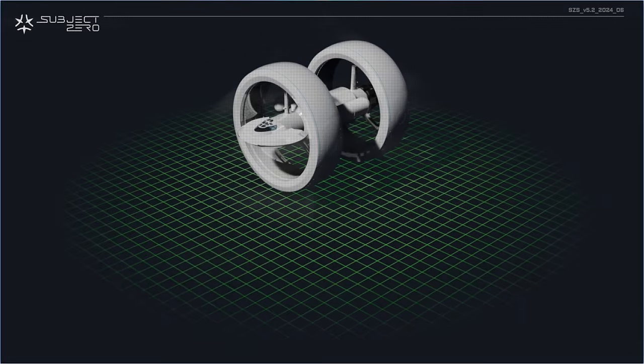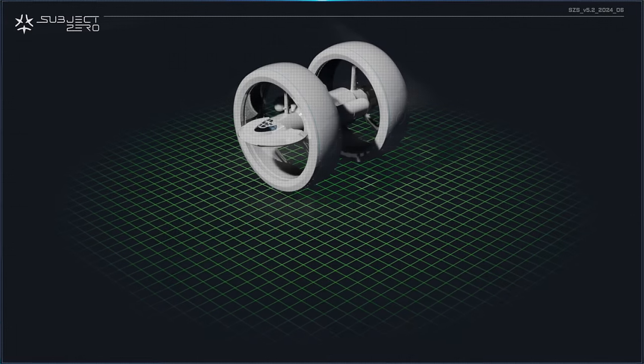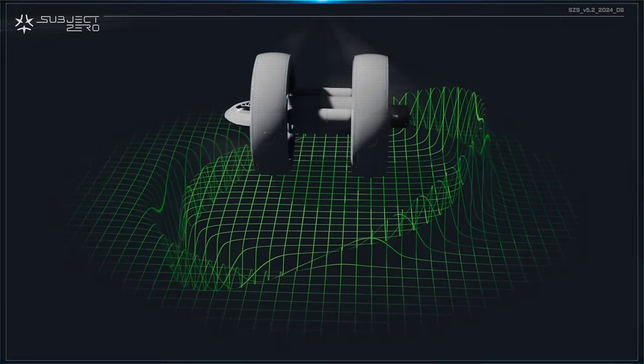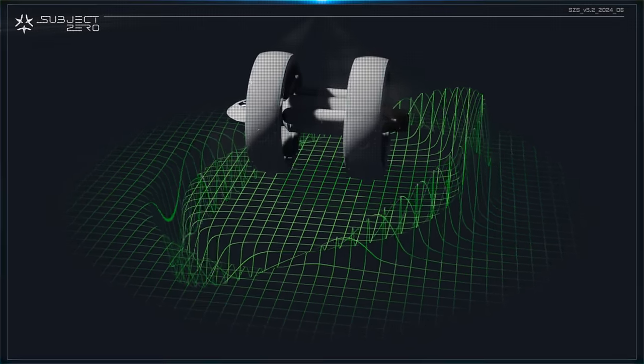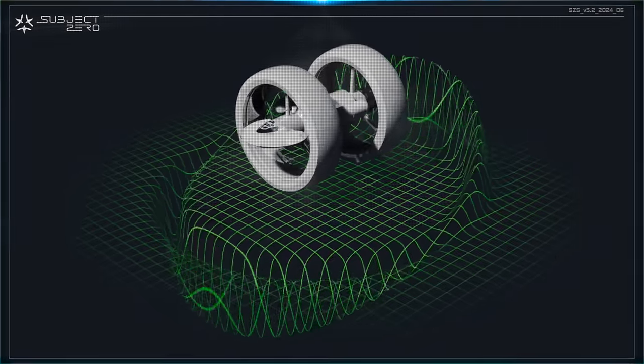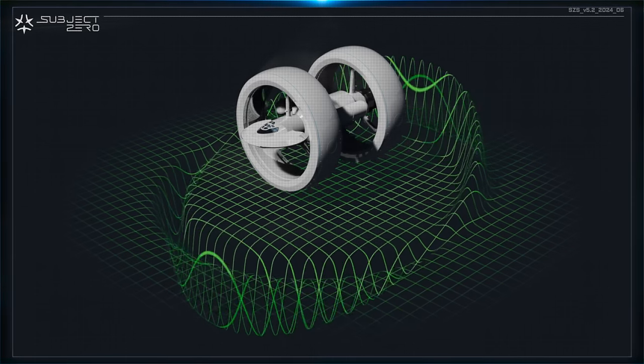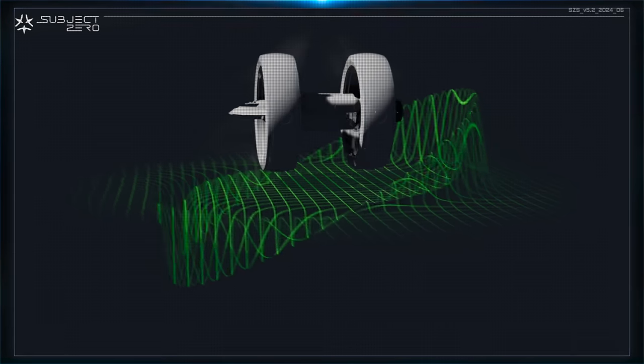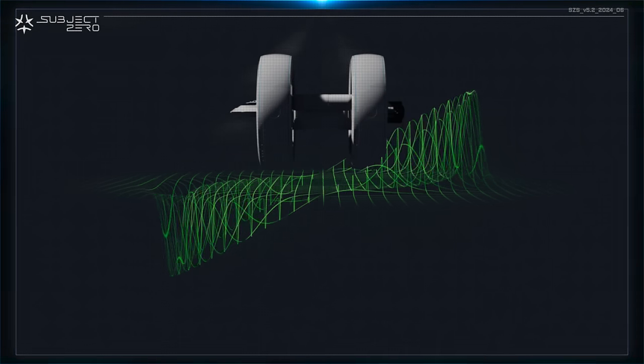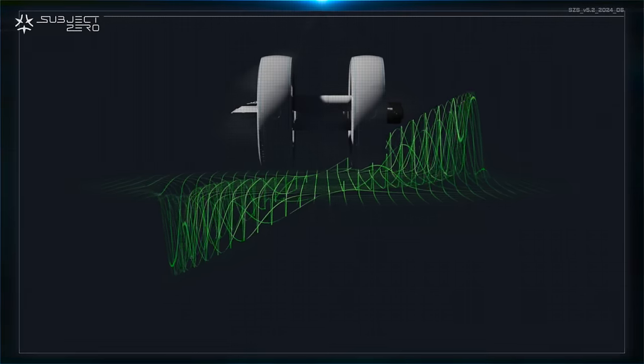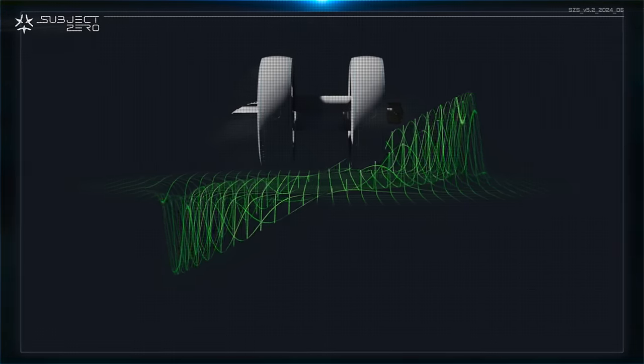Warp bubble, central to Alcubierre warp drive theory, involves the creation of a localized region of distorted spacetime around the spacecraft. Within this bubble, spacetime is contracted in front of the spacecraft and expanded behind it. This contraction and expansion of spacetime forms a warp, or a distortion that enables faster-than-light travel without violating the principles of relativity.